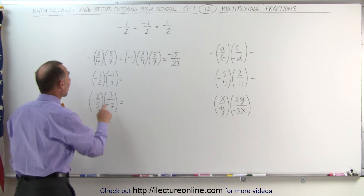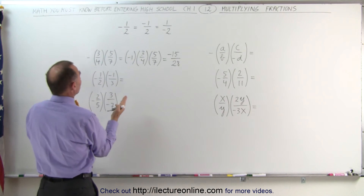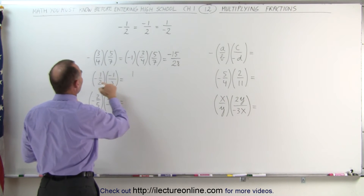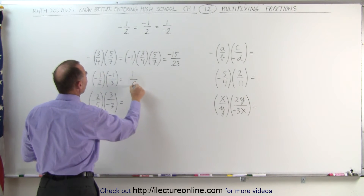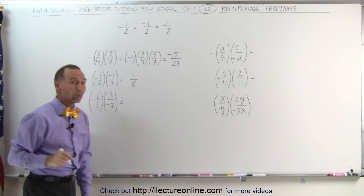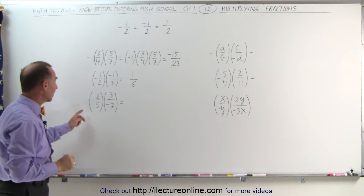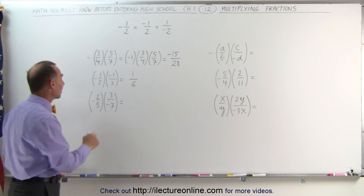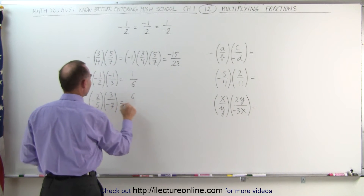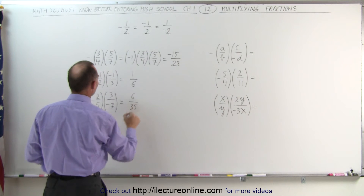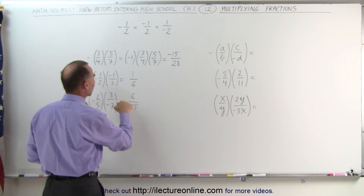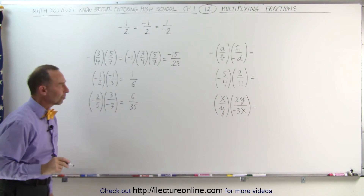For the next example, we're going to ignore the negative signs first — 1 times 1 in the numerator, and 2 times 3 in the denominator gives one sixth. There are two negative signs, therefore the answer will be positive. Here again, ignoring the negative signs: 2 times 3 is 6, and 5 times 7 is 35. With two negative signs, negative times negative is positive, so 6 over 35 is the correct answer.